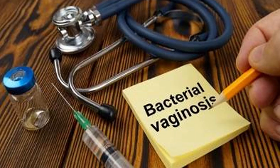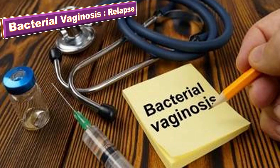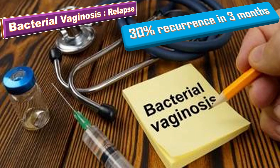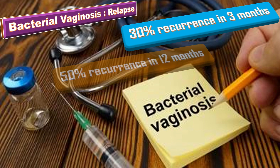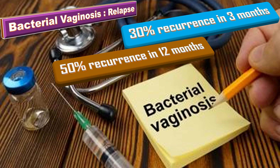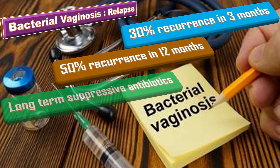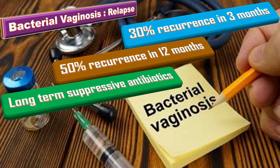Let us talk about bacterial vaginosis relapse. There is 30% recurrence in 3 months and 50% recurrence in 12 months. Long-term suppressive antibiotics may be indicated when 3 or more episodes occur within a 12-month period.